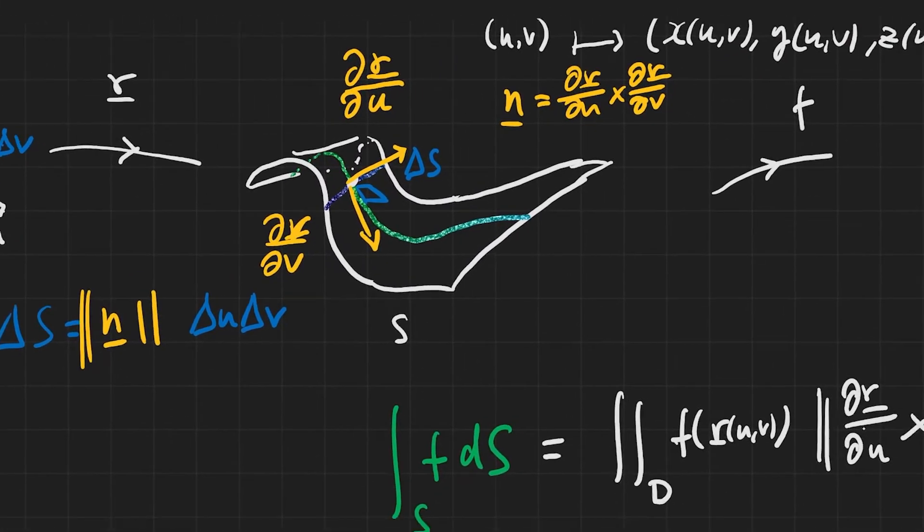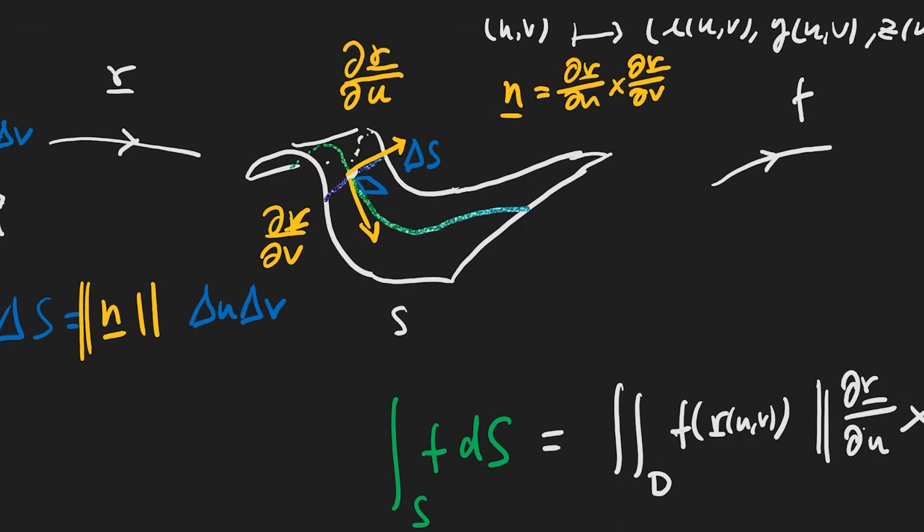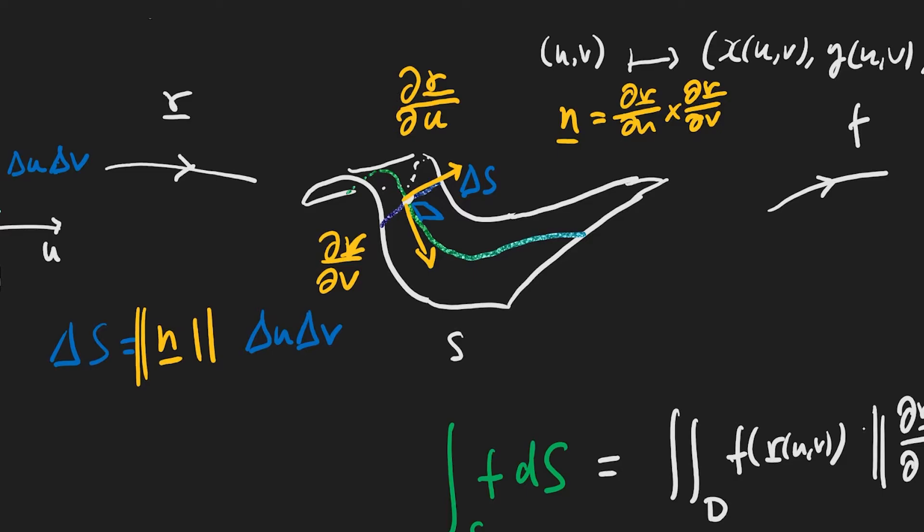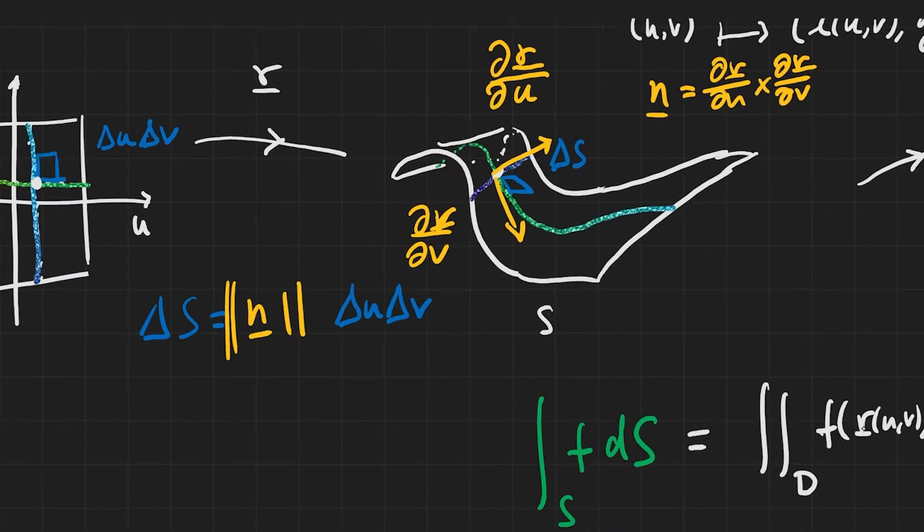So, as the geometry indicates, we can define some tangent vectors to our surface basically by considering the parameter curves, the u and v curves, and so taking their tangent means taking these partial derivatives of the parameterization. And then the proportionality factor between the two will be given by the length of the cross product, because, of course, the cross product is giving you the area of the parallelogram that is spanned by these two vectors.